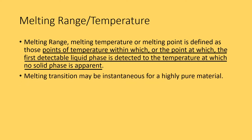Melting transition may be instantaneous for a highly pure material. As a general rule, if the purity is high, the melting point will be on the upper side of the range and it melts instantaneously — that means it melts totally in one go. This is a general characteristic of compounds and has to be understood in detail.